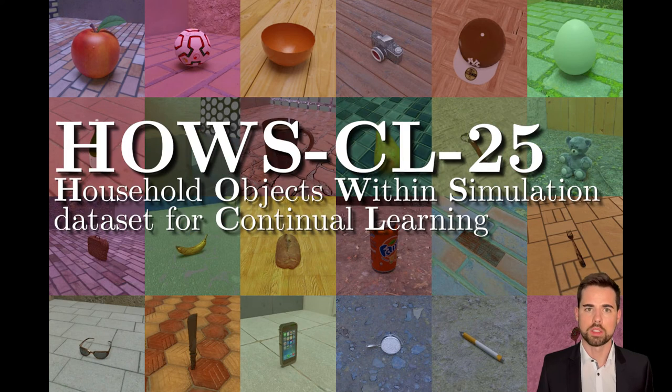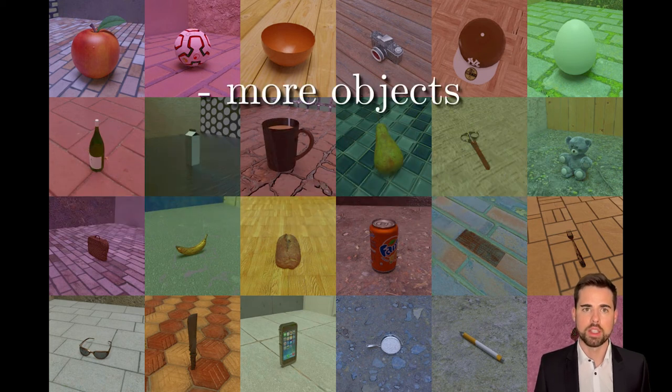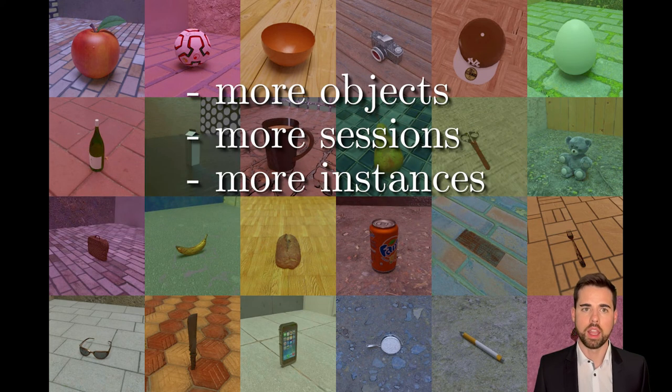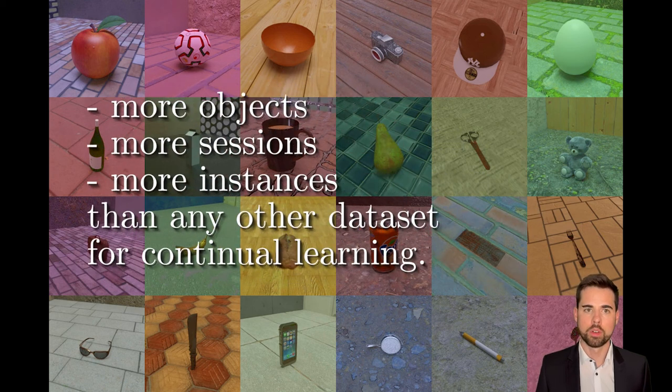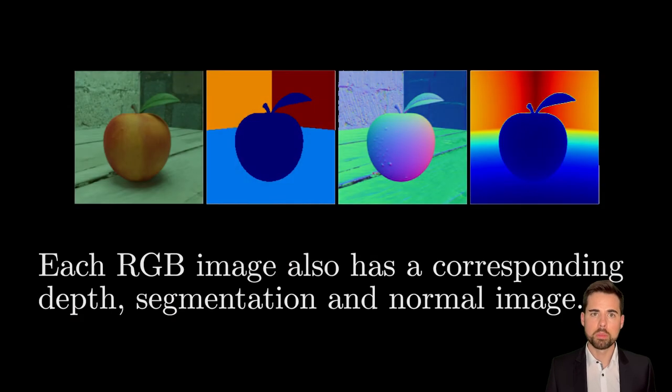We also created our own dataset, called Household Objects Within Simulation dataset for continual learning, or short HOUSE. It has more objects, sessions, and instances than any other dataset for continual learning. Furthermore, it is available in 5 or 12 sequences. As we use BlenderProc as a pipeline for our synthetic data generation, it is pretty easy to add new classes. As a bonus, we can also get corresponding depth, segmentation, and normal images, which we added to the dataset.